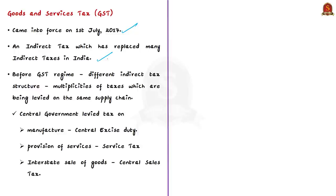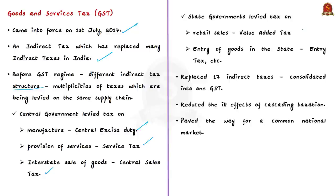Before the GST regime, we had a different indirect tax structure. The central government levied central excise duty on manufacture, service tax on provision of services, and central sales tax on interstate sale of goods. The state government also levied value added tax on retail sales, entry tax on entry of goods in the state, as well as luxury tax, purchase tax, etc. It is clearly visible that there were multiplicities of taxes being levied on the same supply chain.